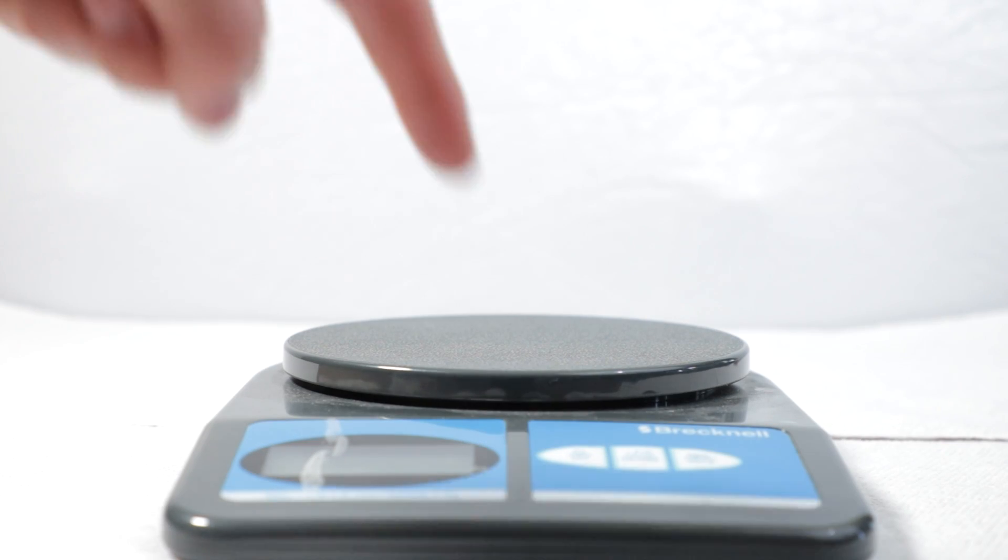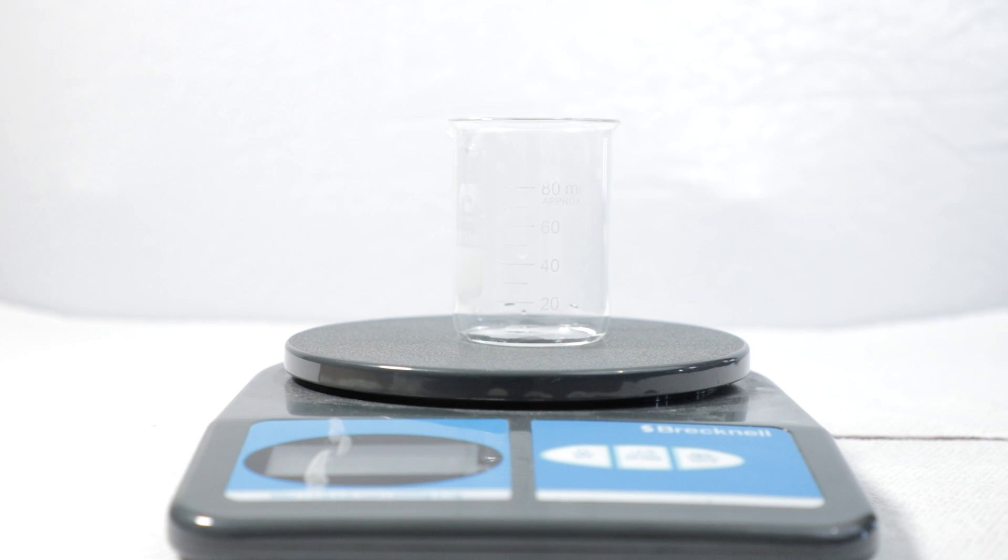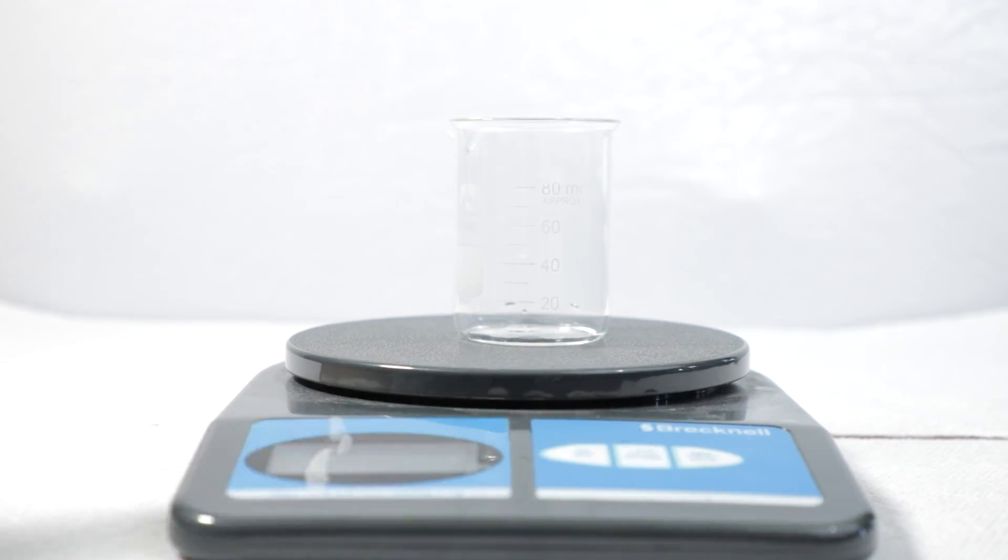Let's do another calculation this time using water. If you have a digital scale the easy way to get the mass of an object minus the container is to use the tare function. Place the container on the scale and then press tare.